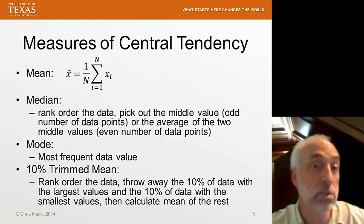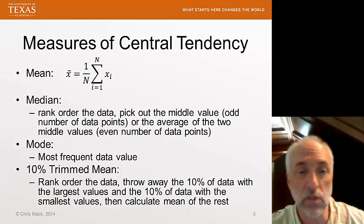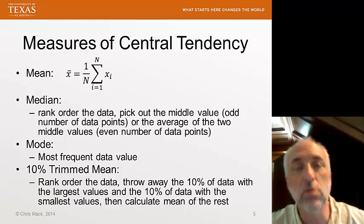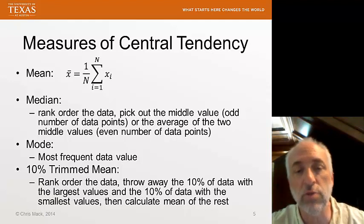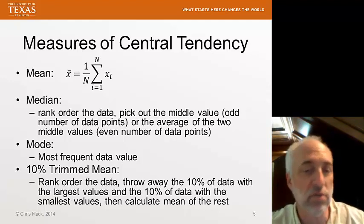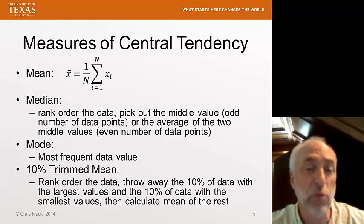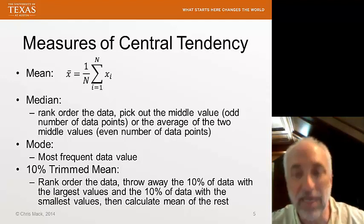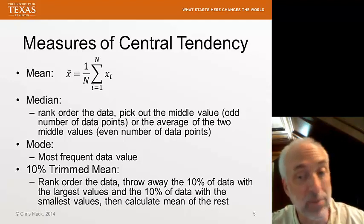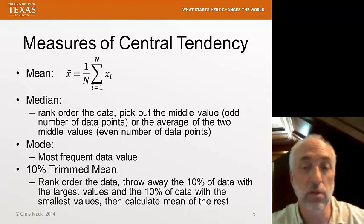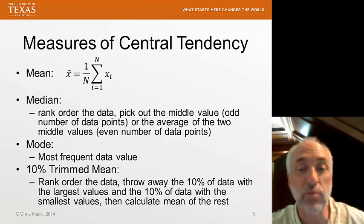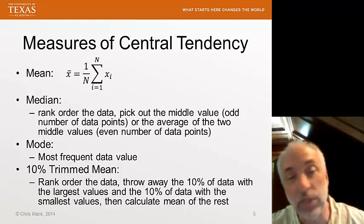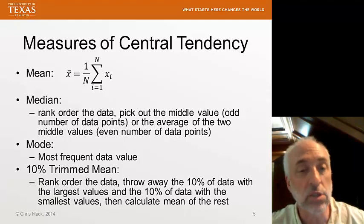Now another important measure of central tendency that is used less frequently than it probably should is called the trimmed mean. The 10% trimmed mean is a very common example. What do you do? You rank order the data like you're going to calculate the median, but then you throw away the 10% of the data that has the largest values and the 10% of the data with the smallest values. Now you're left with the middle 80%. From the middle 80%, you simply calculate the mean just as you would before.